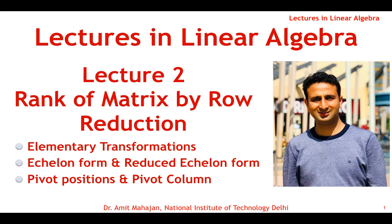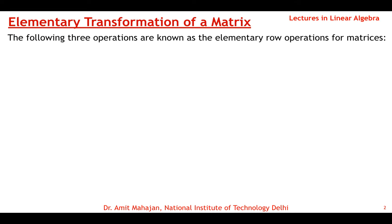Let us first take the definition of elementary transformations. The following three operations are known as the elementary row operations for matrices. If you are given any matrix, you can apply one of these three operations on the matrix — they are known as elementary operations or elementary transformations.